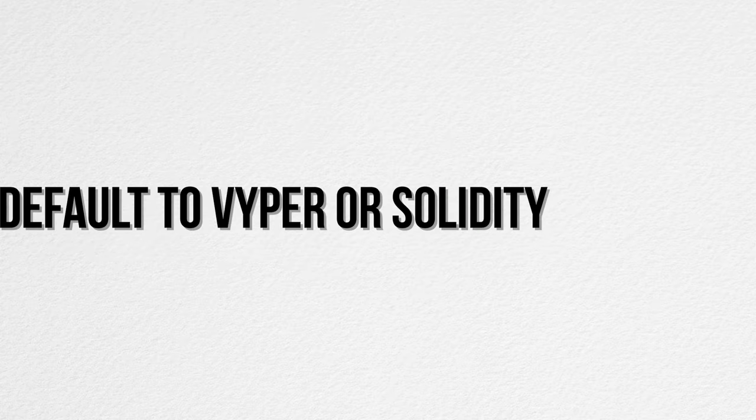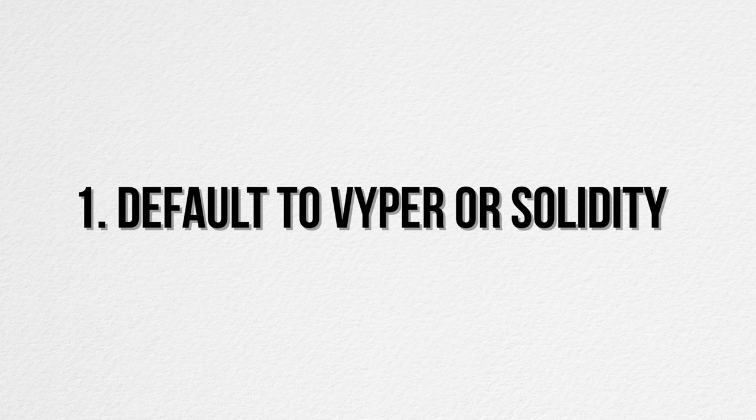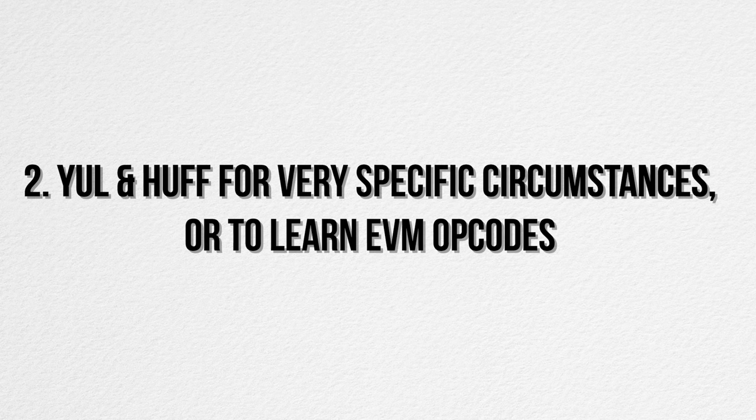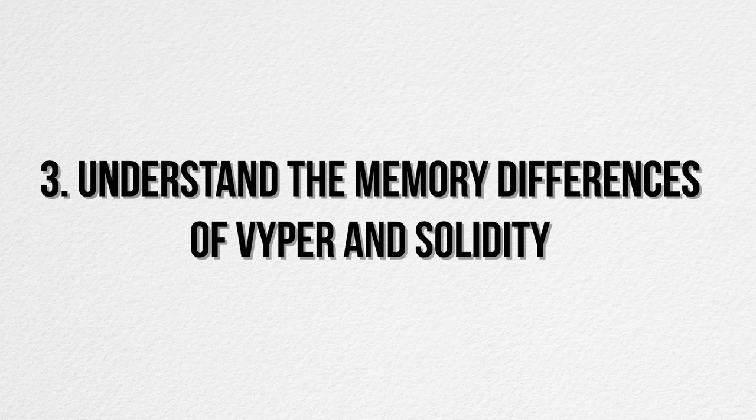We've gone through a lot here. My official recommendation for the smart contract language you should use is: whatever you want to use. But seriously, each one of these has their advantages and is worthwhile for production EVM code. If you're coding production smart contracts, use Viper or Solidity — they're both high-level languages that will protect you from shooting yourself in the foot by checking call data sizes, accidental ETH sends, and safe math. Huff and Yule are fantastic if you need very specifically performant code or you're looking to learn more about the EVM, but I don't recommend them for all your production code. Finally, understand the memory differences between Viper and Solidity — the free memory pointer is one of the main differences in gas costs.